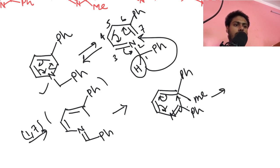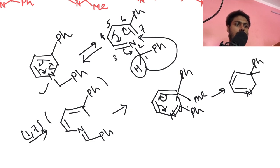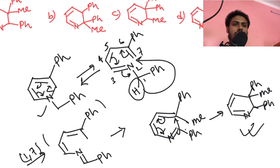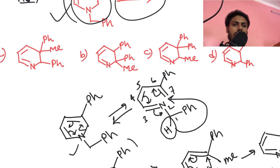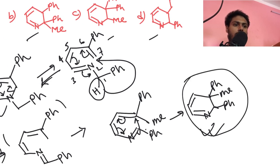The electrocyclic ring closing reaction gives you this product: here you have nitrogen, a double bond, another double bond, Ph, methyl, and another Ph. Now let us check what options were given — this one, this one, this one, and this one.